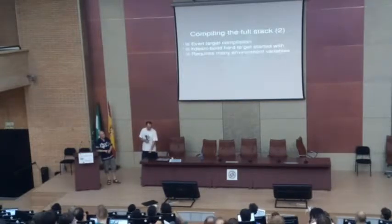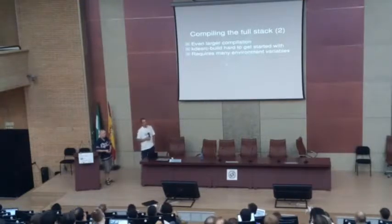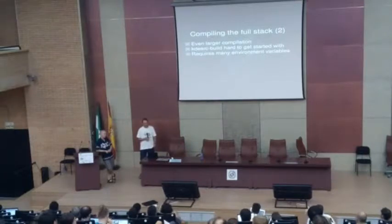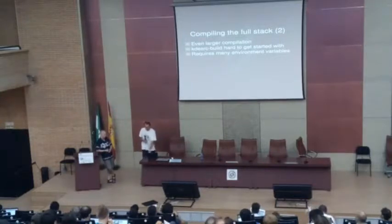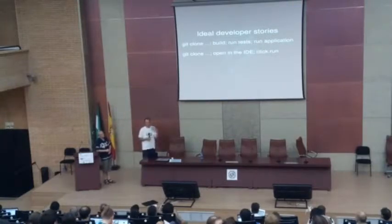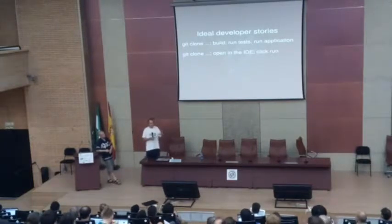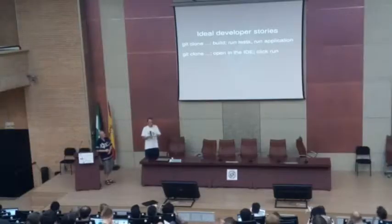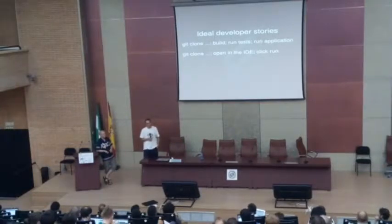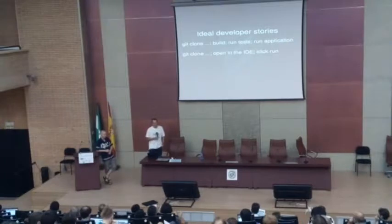Obviously you know the problems with building everything: it's an even larger compilation — you get to compile 400 repos — and you need a ton of environment variables. All of this is fine for some of us, but if you're a new contributor, this is quite overwhelming. Ideally, we would like to make it possible for people to just say: I'm cloning this repo, I want to build it, and it should just work. Clone, build, run the tests, run the application — with no make install step.